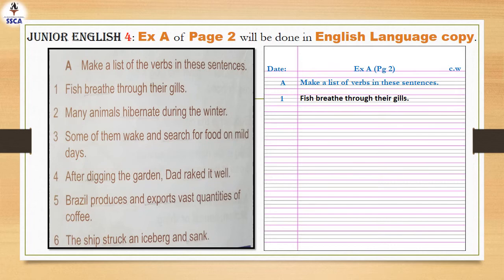How to do this work in your copy? Make sure you mention the exercise and page number in your copy. And then on the right corner you will write C.W., that means classwork. Then you have to copy down the question, which is: make a list of verbs in these sentences, with blue color.